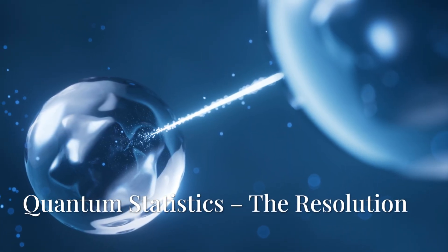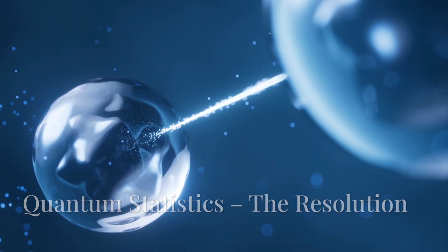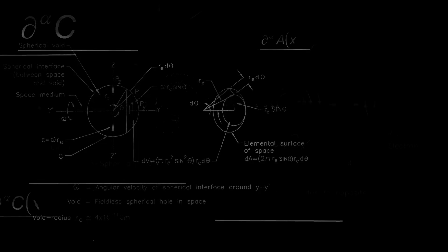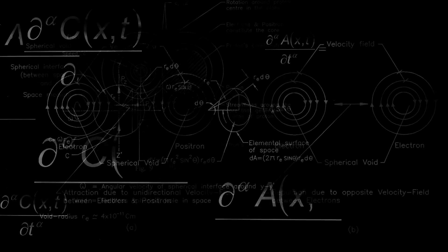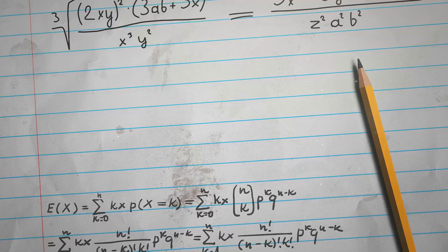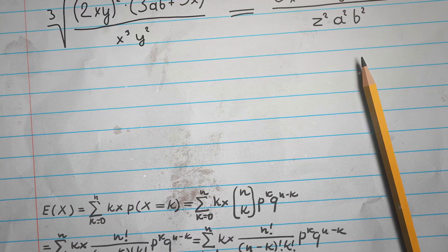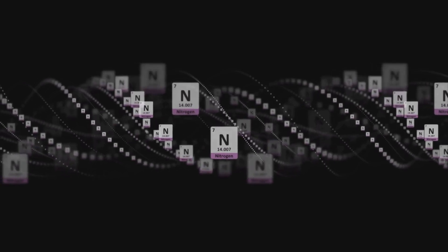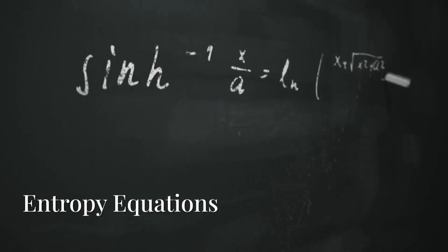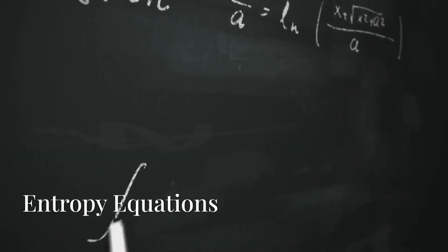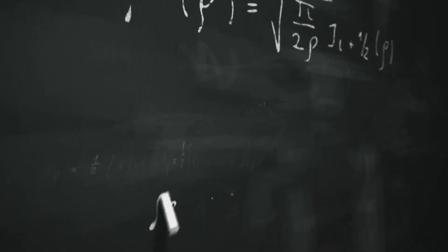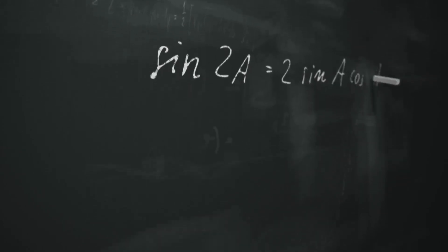Quantum mechanics resolves this paradox by treating identical particles as indistinguishable. When calculating the thermodynamic probability W, which is the number of microstates, overcounting is avoided by dividing W by N factorial, where N is the number of identical particles. The relationship between entropy, denoted as S, and the thermodynamic probability, denoted as W, is S equals K times the natural logarithm of W.